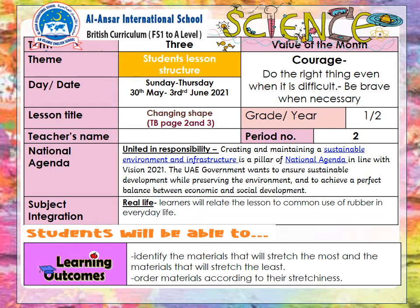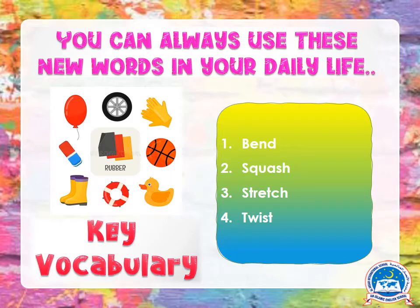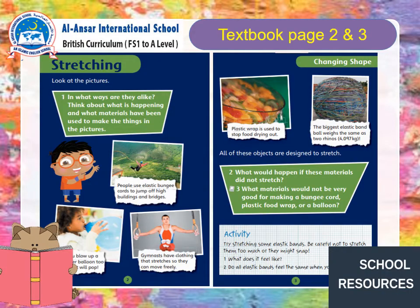Let's have a look at what you are going to learn in this lesson. Today you're going to identify the material that will stretch the most and the materials that will stretch the least, and you're going to order materials according to their stretchiness. Here are your key words: number one — bend, number two — squash, number three — stretch, and number four — twist.